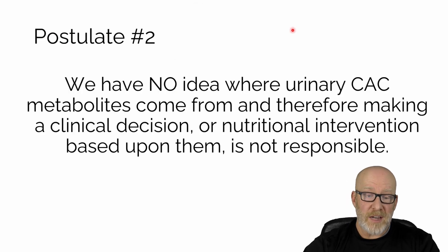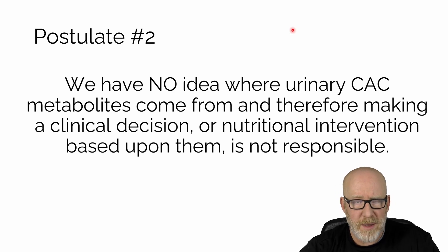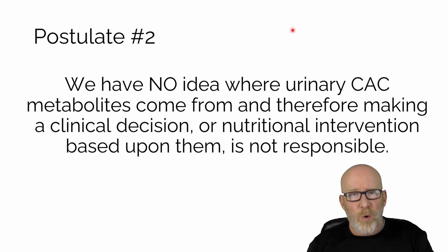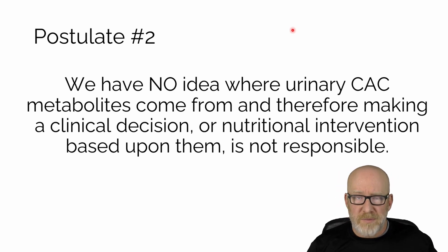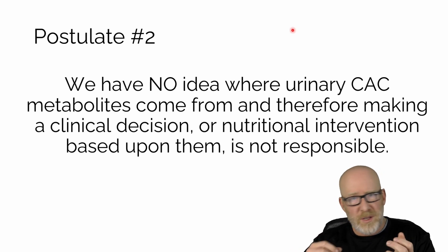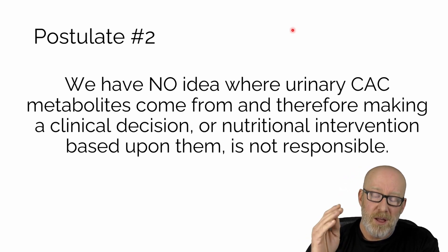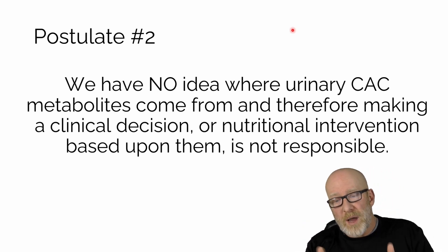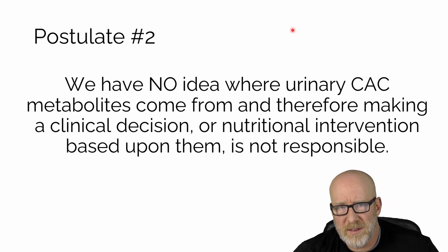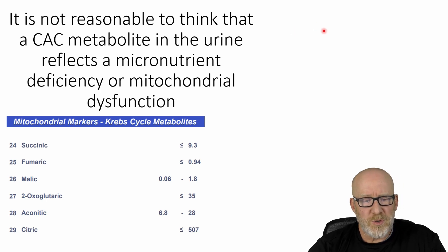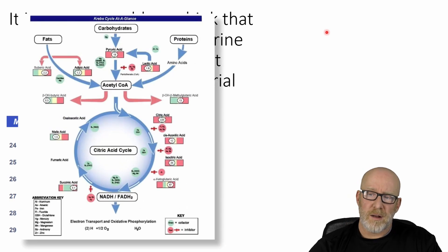So my second postulate is that we actually have no idea where the urinary citric acid cycle metabolites are coming from, and therefore making a clinical decision or nutritional intervention based upon them is simply not responsible. You can't look at citric acid cycle metabolites on a urinary organic acid test and say somebody is deficient in B vitamins or magnesium, or has aluminum toxicity or whatever it might be. There are extracellular receptors and transporters for these, some cells might be spilling a lot while others spill none, and on a single urinary test we say 'your citrate is high and your succinate is low, therefore blank.' I don't think it's reasonable to think that citric acid cycle metabolites in the urine reflect a micronutrient deficiency, mitochondrial dysfunction, or even toxin exposure the way some are leading us to believe.